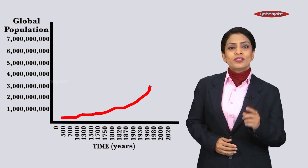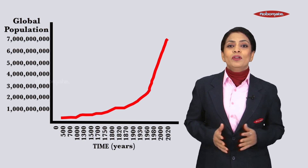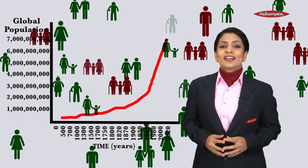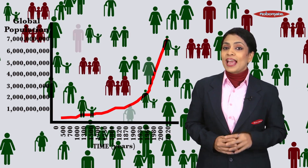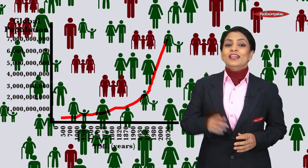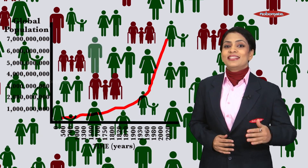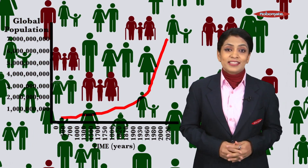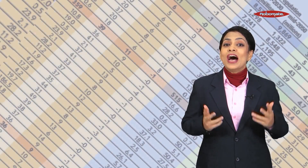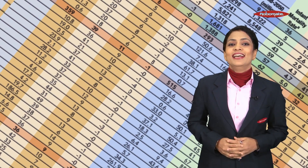Population statistics are some of the most important data that social scientists and policy experts have to work with. But understanding a country's situation and making accurate predictions requires knowing not just the total size of the population, but its internal characteristics such as age and gender distribution as well.